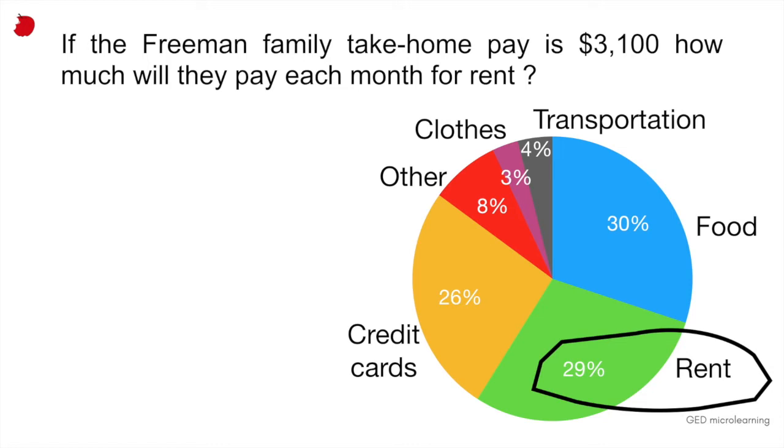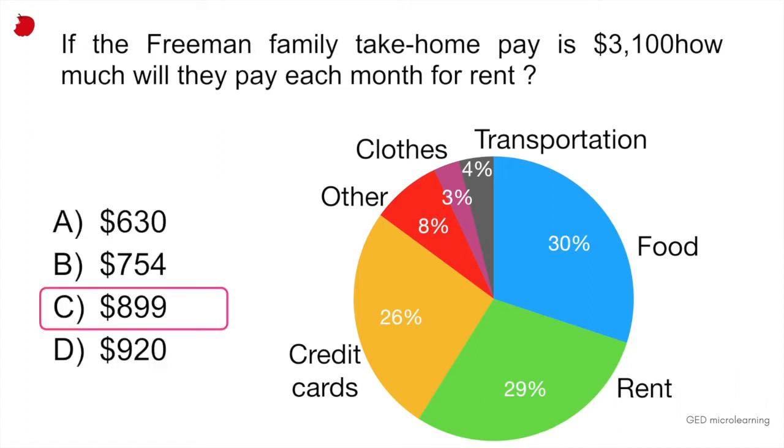So all you do is multiply that 29% by their take-home pay. When you multiply 29% or 0.29 by 3,100, that gives you 899. So out of their whole take-home pay, that's how much money is going to be spent on rent. The correct answer would be C.